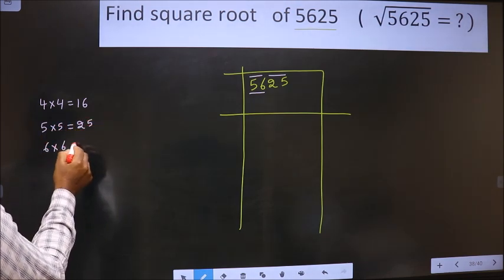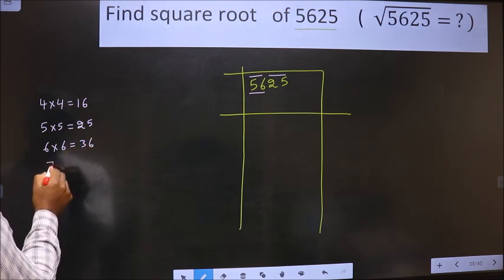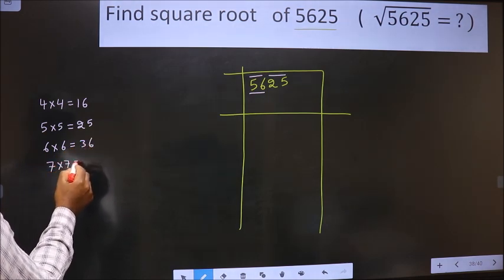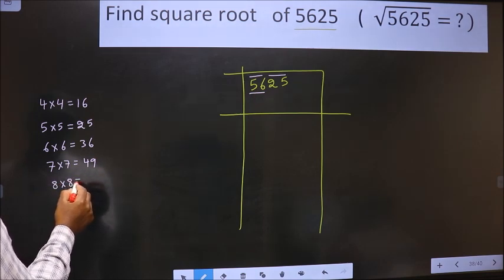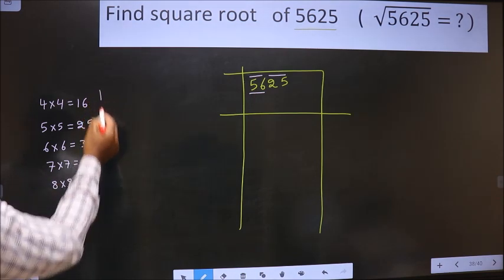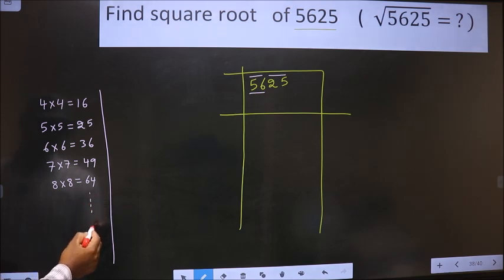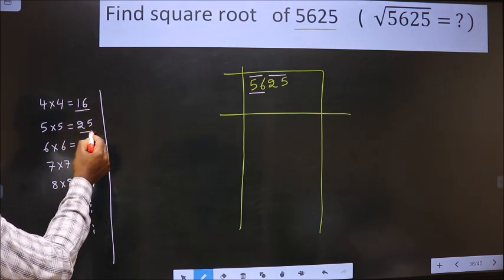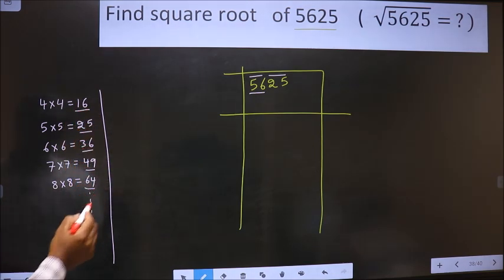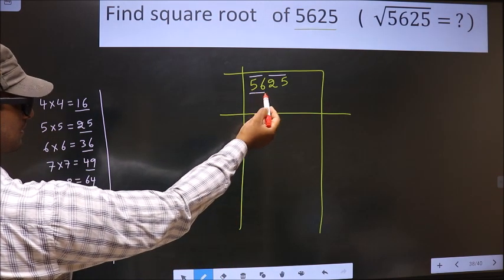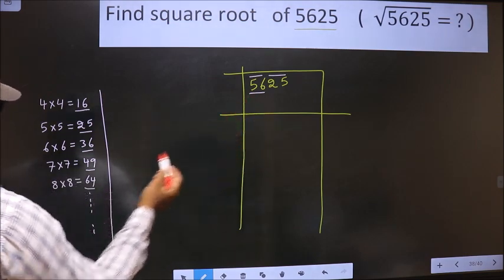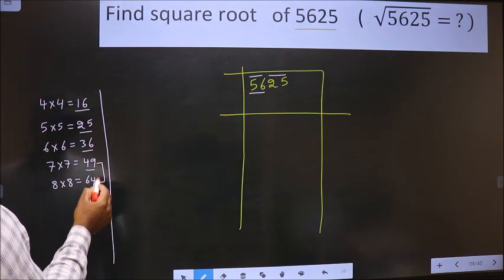6 × 6 is 36, 7 × 7 is 49, 8 × 8 is 64 and it goes on. These numbers are called perfect square numbers and here we have 56.